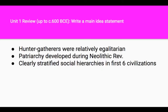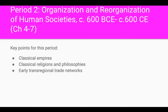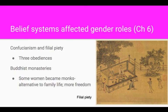Now you'll write a main idea statement for Unit 1. For Unit 2, we have the classical era. One thing to remember is that there are major religions and philosophies that developed during the classical era, and they sometimes affected gender roles. Confucius was a patriarchal thinker. Filial piety means obedience to your family, and under Confucian philosophy that means the father figure. You might remember the three obediences as an example of a woman subverting her will to that of the male in her life.